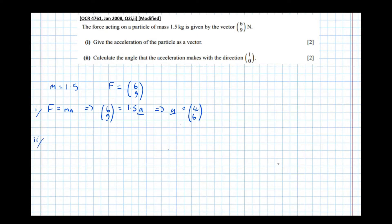So part two, calculate the angle that the acceleration makes with the direction (1, 0). So that's 1 in the x direction, not in the 0 direction, so it's this vector here. So that's the direction of (1, 0). And the angle that the vector (4, 6) makes with that, so let's draw the triangle (4, 6).